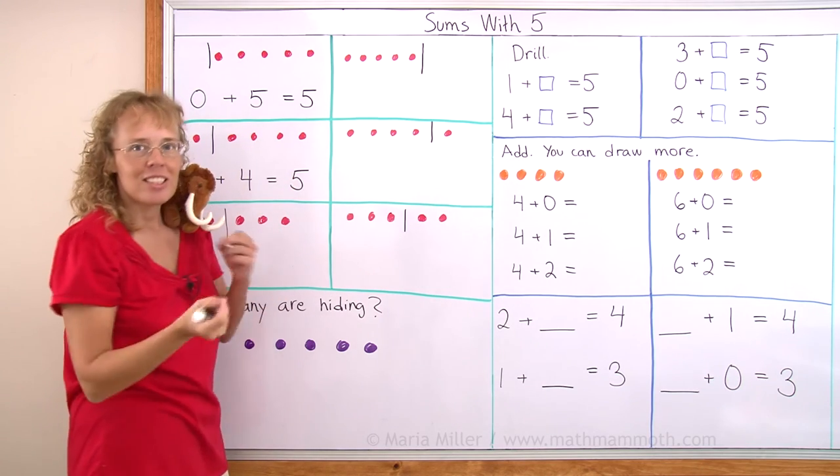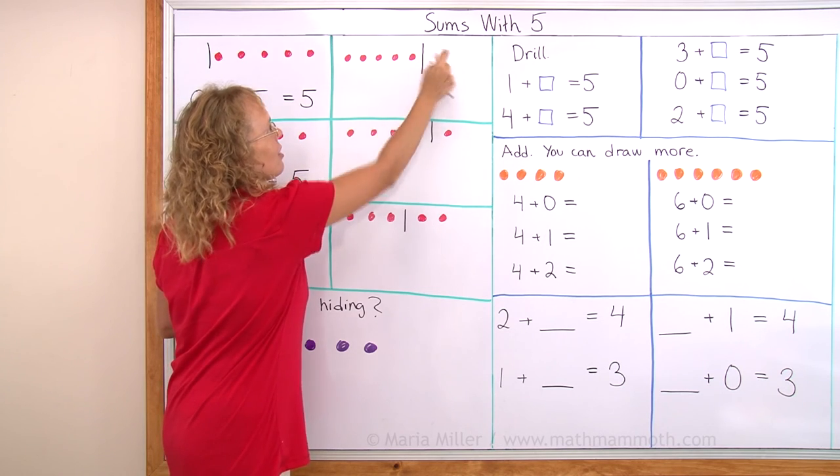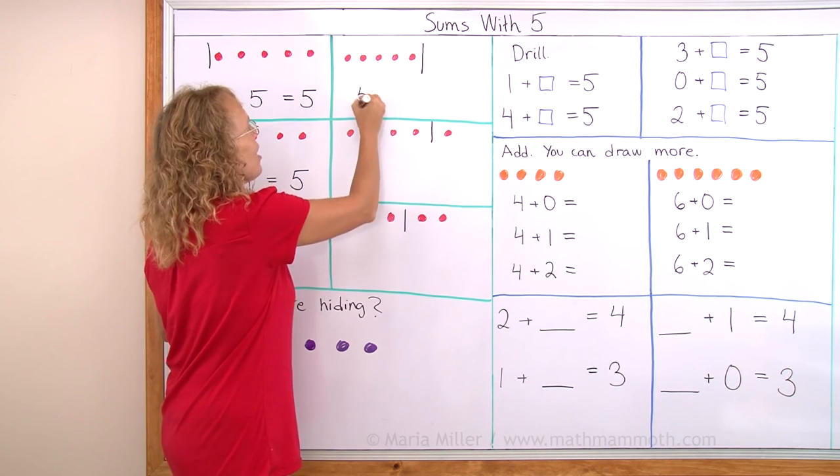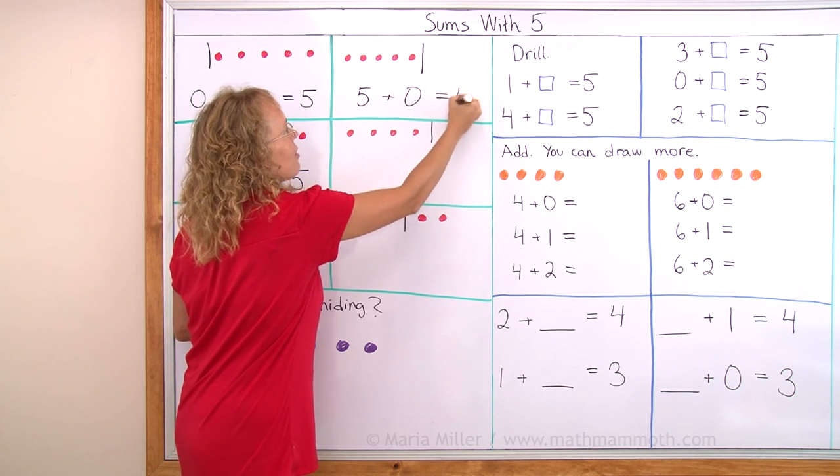Over here I have it just the other way around. Five strawberries on this side and none on that side. So I write the addition five plus and then none is zero and that equals five, right?